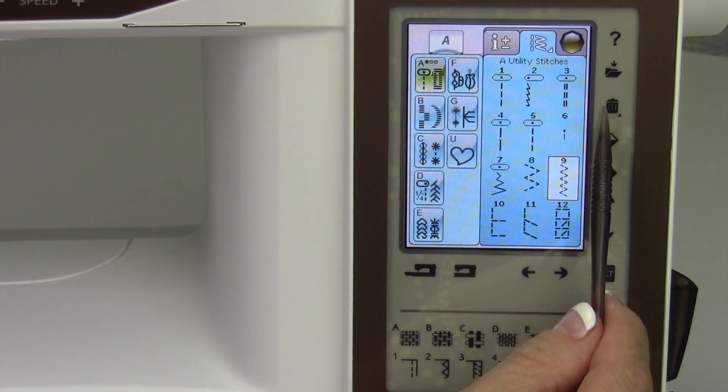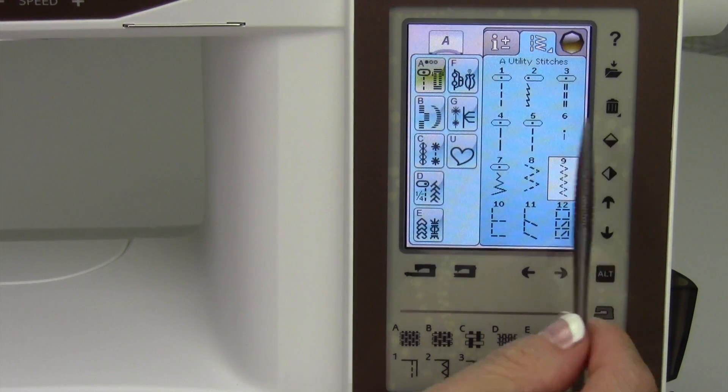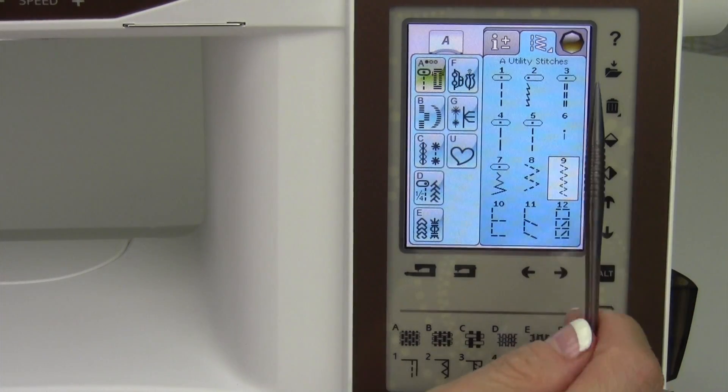If you just touch it once, it deletes one item, but if you touch and hold it, it will be like, would you like to delete all? There will be a little message that will pop up, and you'll say yes or no.